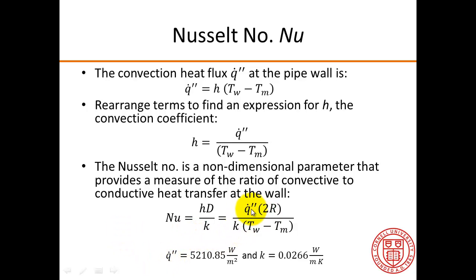And the convective heat flux is the value here, which you might recall was entered as a boundary condition for the heated wall. And the fluid thermal conductivity is this value here, which you might recall was entered as a material property.